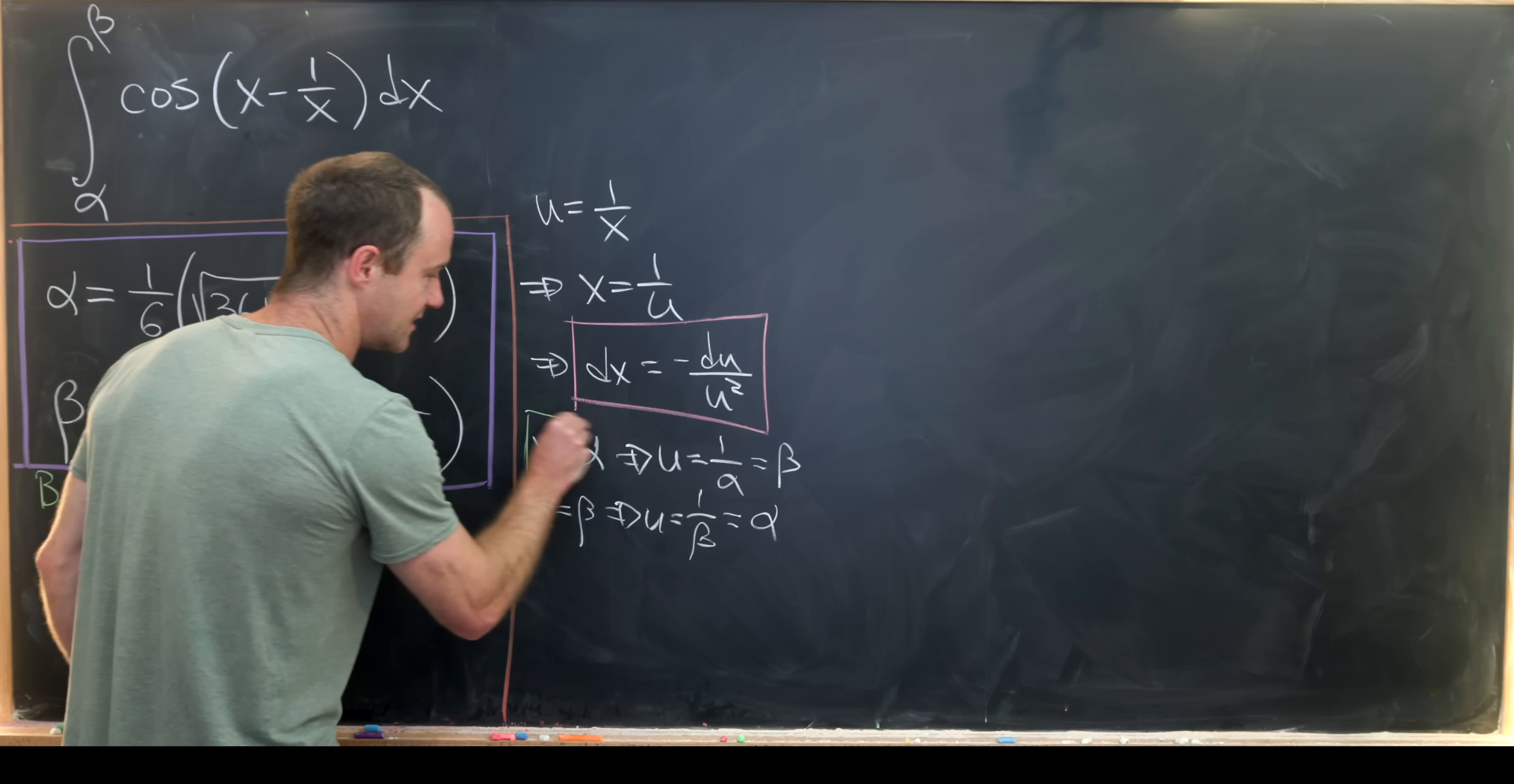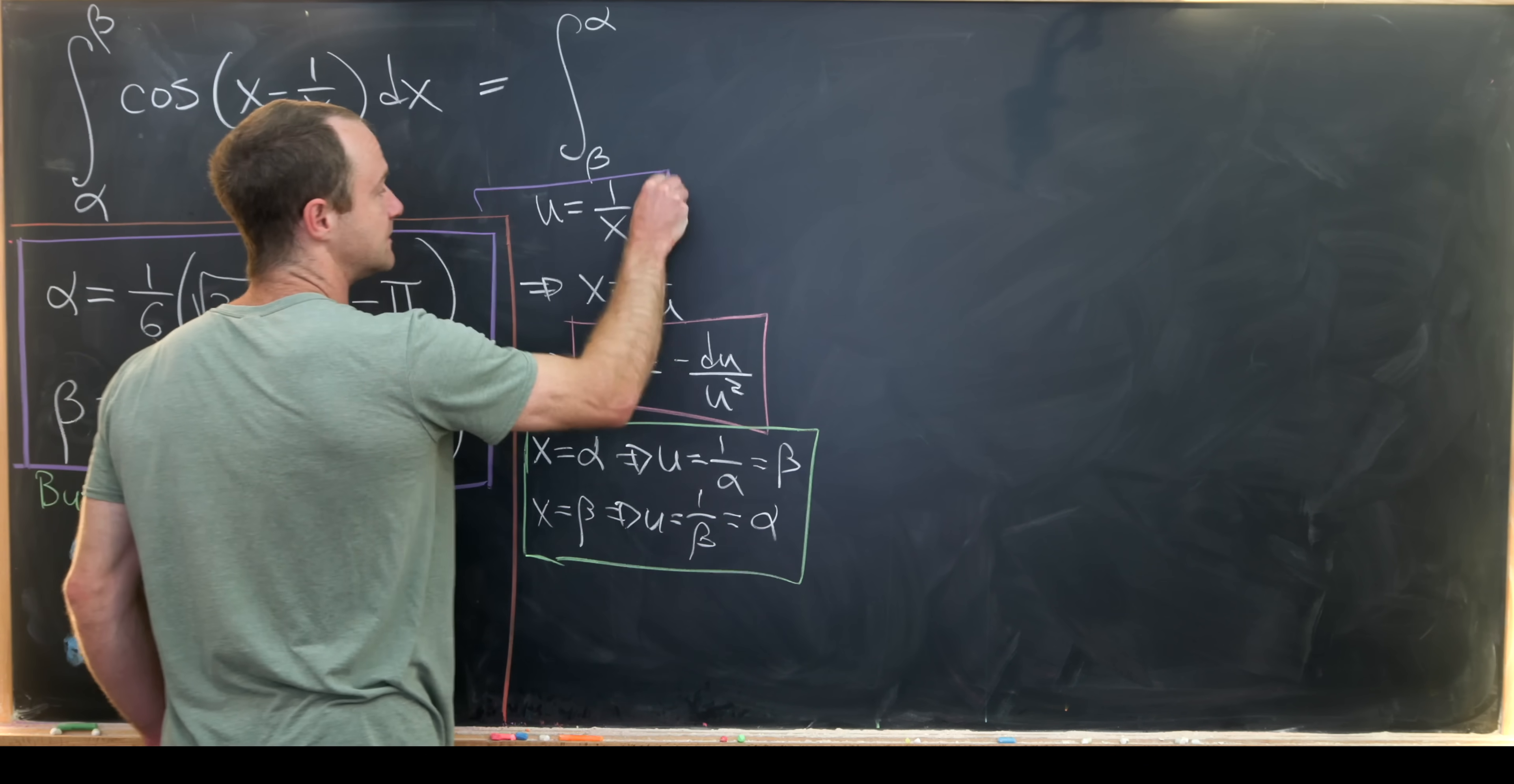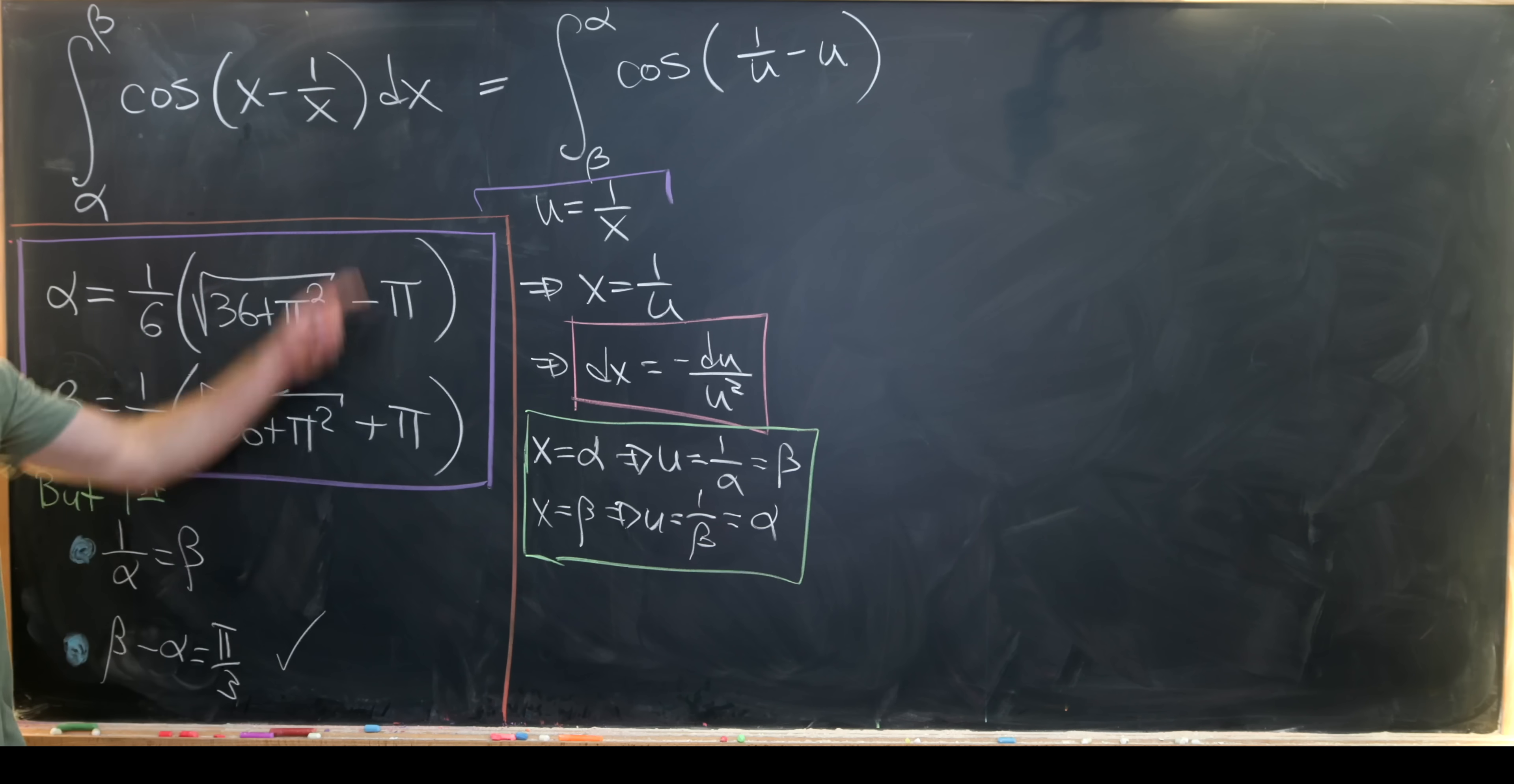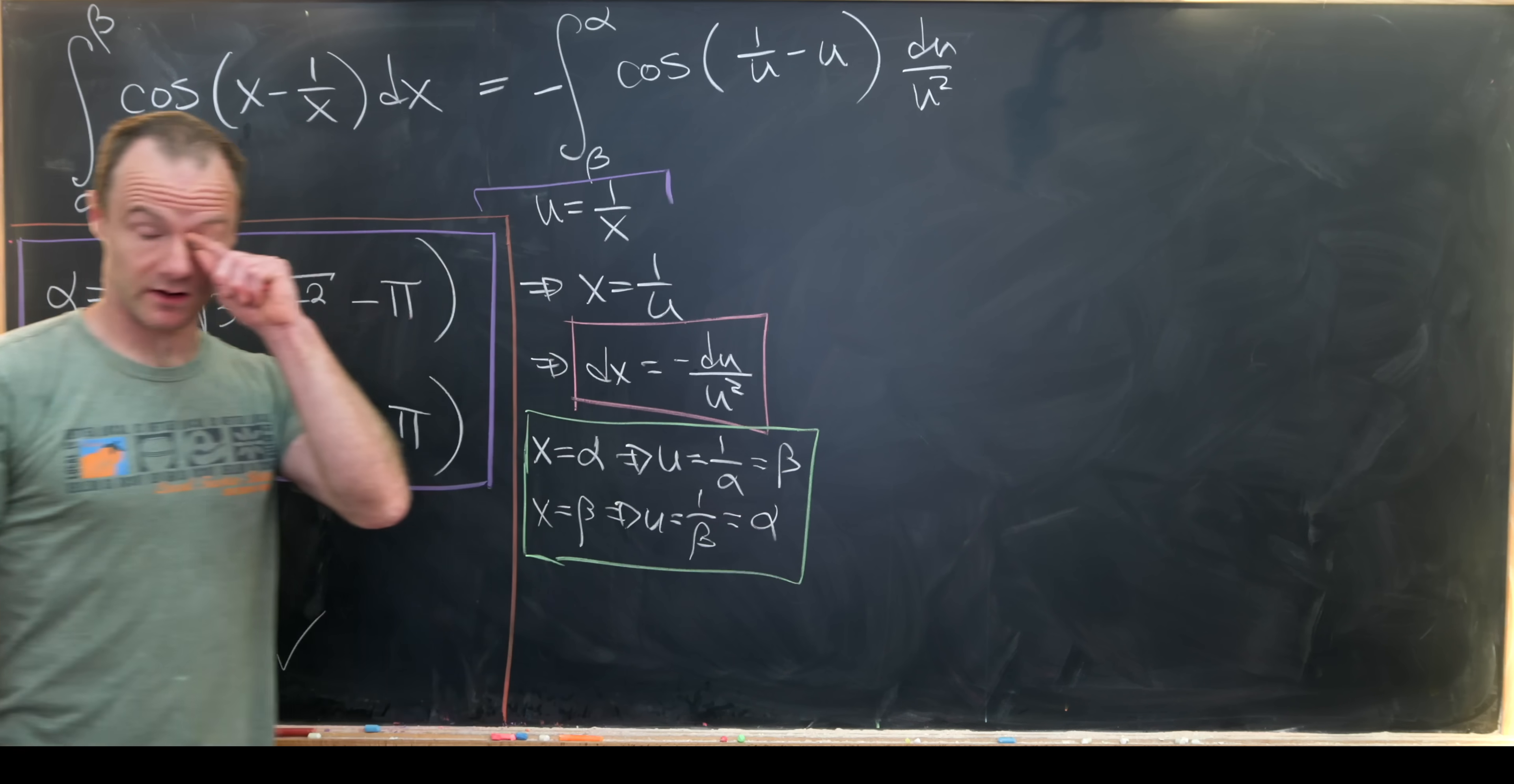So now that we've got this taken care of we can totally exchange our x integral for our u integral. And now this will be the integral from beta to alpha now because we're in the u world of the cosine of 1 over u minus u, and then we've got dx which is a minus sign. Let's bring that out. And then we have du over u squared.